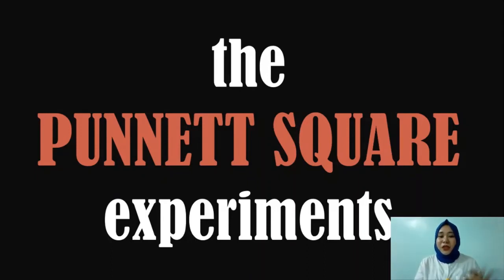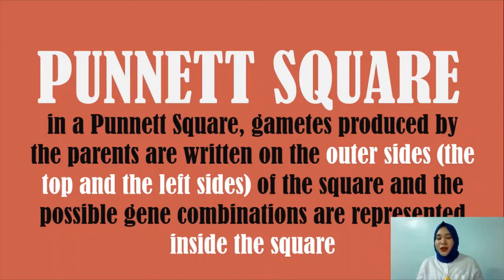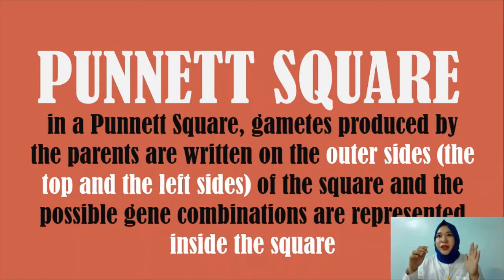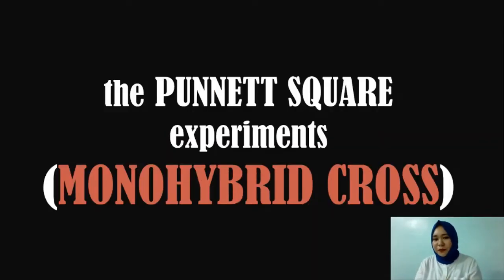The Punnett square is a diagram or tool used by geneticists to predict outcomes of a particular cross. In the Punnett square, the gametes or genotypes of the parents are written on the outer sides of the square — on the top and the left side. The possible gene combinations or outcomes are represented inside the square. Capital letters represent dominant alleles and lowercase letters represent recessive alleles.